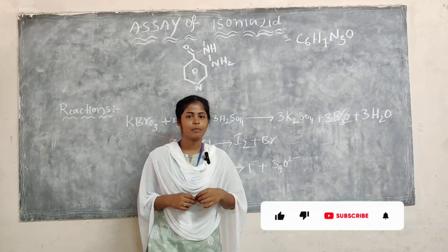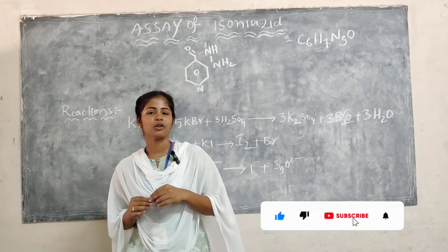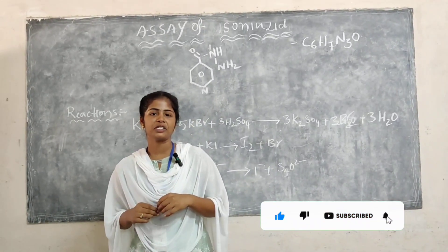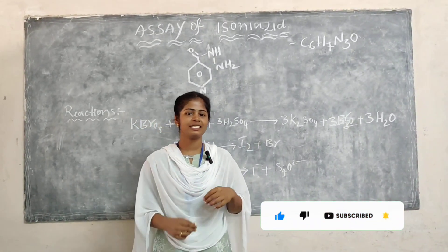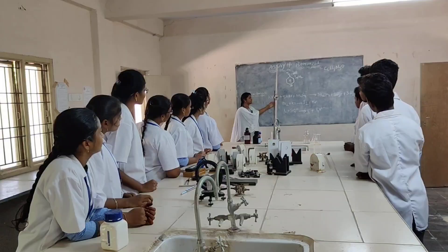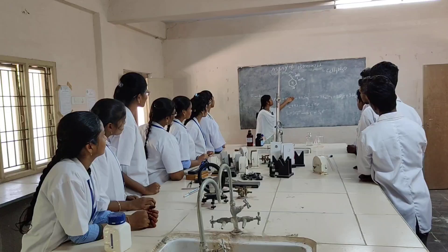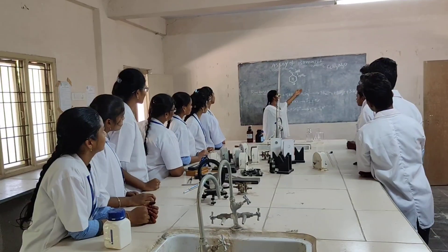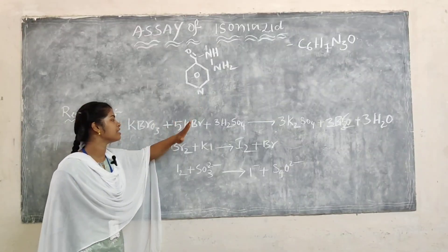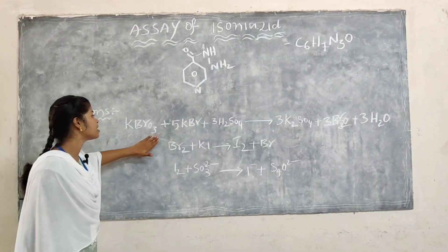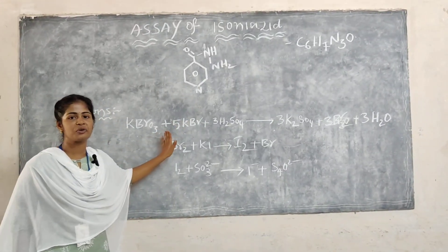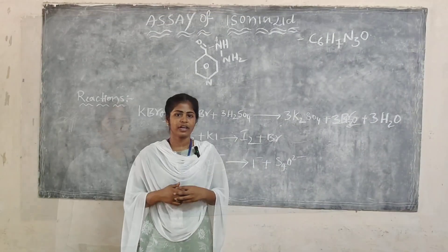Firstly, we discuss about the general molecular formula of Isoniazid, which is C6H7N3O. This is the structure of Isoniazid, and this is the final reaction of Isoniazid.